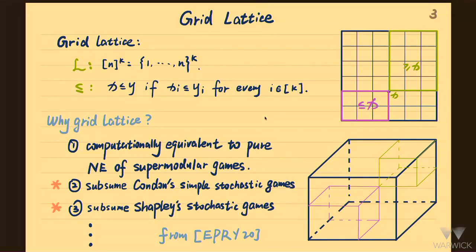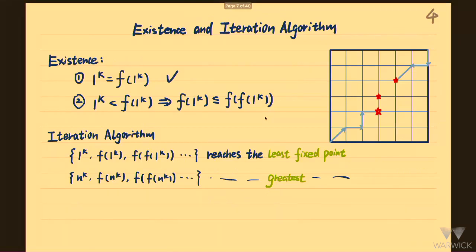In the reduction for the stochastic game problems, when you reduce stochastic games to Tarski fixed point, it is guaranteed that the instance you get has a unique Tarski fixed point. So this is one motivation that we care about the unique Tarski problem, where you are given a monotone function that is promised to have a unique fixed point. There is a lot of structure in unique Tarski. In the grid lattice, the existence of a fixed point is very easy and I can explain it in a few sentences.